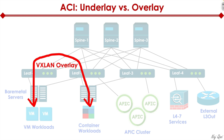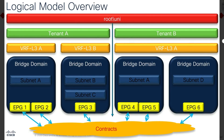For example, using ACI we could do vMotion between data centers. Even though between the leaf and spine switches it's all Layer 3 connectivity, vMotion requires Layer 2 — meaning the same subnet. Using VxLAN, we can extend and create an end-to-end tunnel between geographically dispersed data centers to allow vMotion to happen, thanks to the VxLAN overlay. At a CCNA level, that's what you need to know; at CCNP and beyond, we go into more detail on ACI logical constructs like tenants, bridge domains, and EPGs.